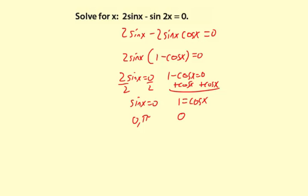Now this is what you'd call a redundant situation. That means we have a 0 here and here. They're both the same number. We only need to use it once. So your solutions are going to be x equals 0 and pi.